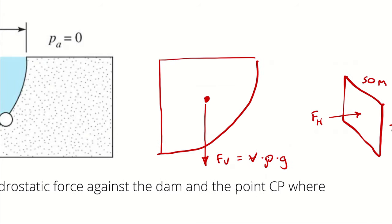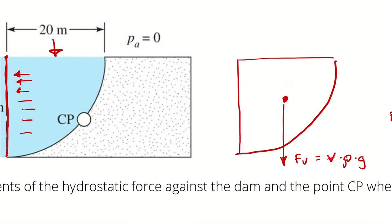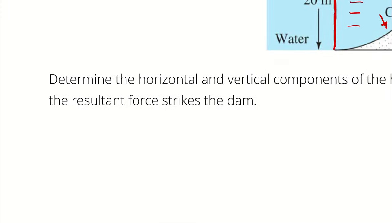There's more good news: because that pressure is always going to act normal to the surface, all we really need is the magnitude. Our magnitude is going to include a horizontal and vertical component, and that will fix CP. I think it'll make more sense once we get into it.